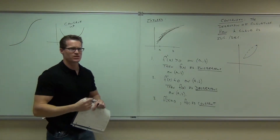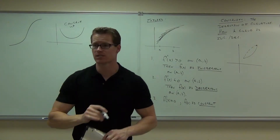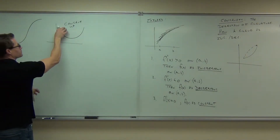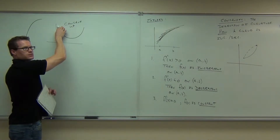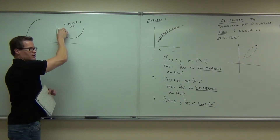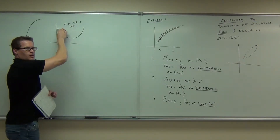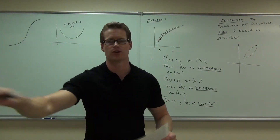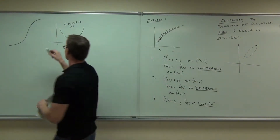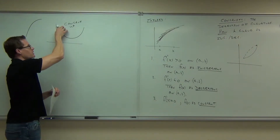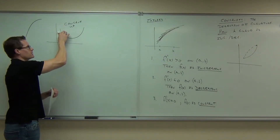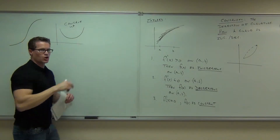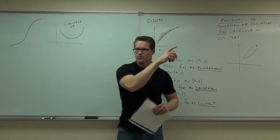Why did I say the slope is increasing? The slope is increasing here. Watch — what's the slope here? Very negative. What's the slope here? A little less negative. We're not talking about the function; we're talking about the slope of the function for concavity. The slope goes: very negative, less negative, less negative, less negative, zero, positive, more positive, more positive. The slope is actually increasing the entire way through.